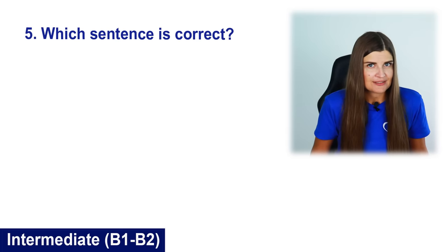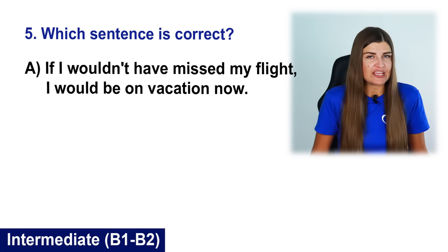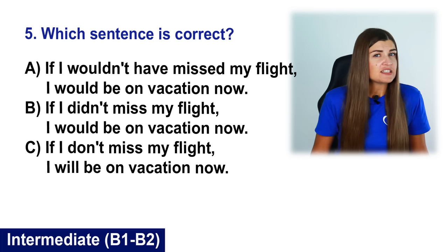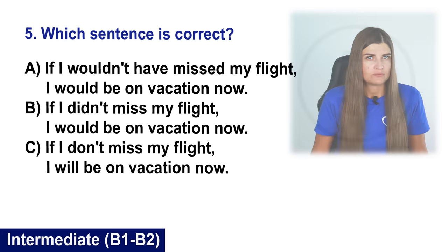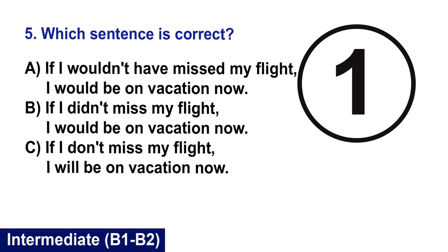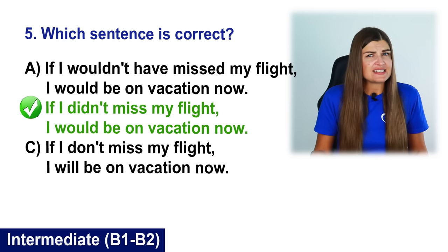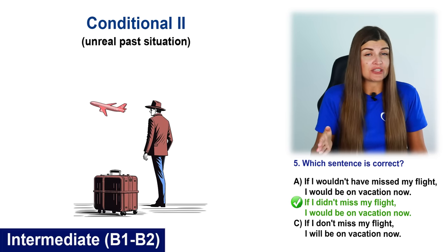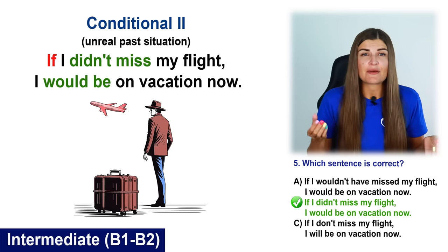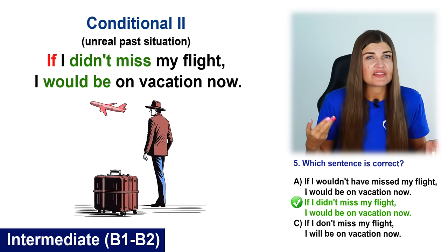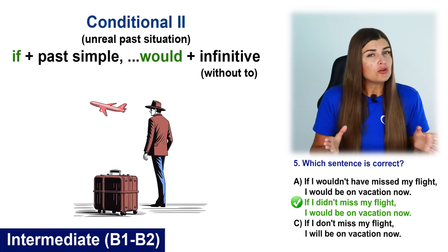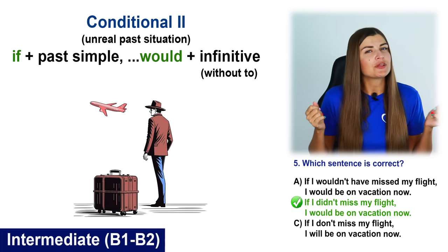Question 5: Which sentence is correct? A. If I wouldn't have missed my flight, I would be on vacation now. B. If I didn't miss my flight, I would be on vacation now. C. If I don't miss my flight, I will be on vacation now. The correct sentence is B: If I didn't miss my flight, I would be on vacation now. Option B uses the correct past tense in the conditional clause matching the unreal past situation. The second conditional uses the past simple after if, then would plus the infinitive: if plus past simple, would plus infinitive. I have a full video on conditional sentences — here is the link so you can watch it after this lesson.